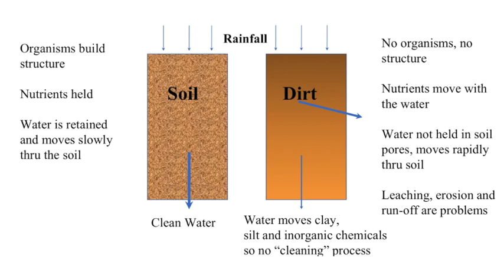As the soil microbes build structure, air passages are formed, ensuring the soil stays aerated, nutrients are held, water is retained, and it moves slowly through the soil. The soil holds water at depth, and the water that moves into underground sources is filtered through the stable organic matter, where toxins are removed and neutralized by the microbes, resulting in clean water reaching groundwater catchments like wells, dams, rivers, lakes, and the sea.